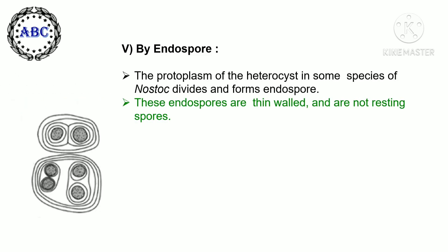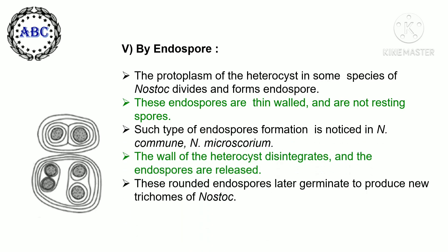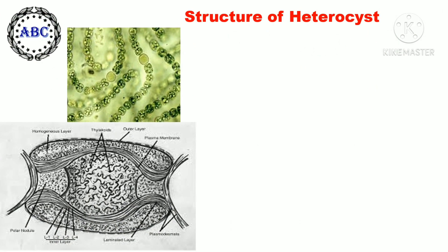Fifth, by endospore formation: the protoplasm of the heterocyst in some species of Nostoc divides and forms endospores. These endospores are thin-walled and are not resting spores. Such endospore formation is noticed in Nostoc commune and Nostoc microscopicum. The wall of the heterocyst disintegrates and the endospores are released; these rounded endospores later germinate to produce a new trichome of Nostoc.